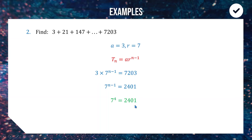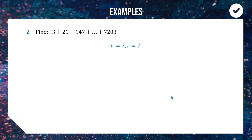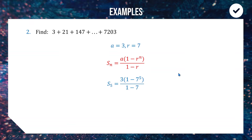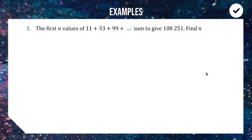So 7203 is the fifth term in the series. Now we can use the sum formula to add together the first five terms: a = 3, r = 7, n = 5. Crunching this through a calculator gives us an answer of 8403 — that's the sum of the first five terms.